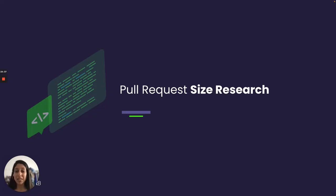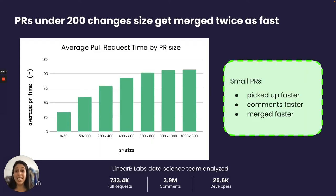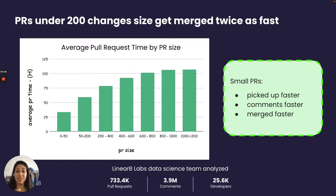At LinearB we did research on PR size based on our customers' data and discovered many interesting things. We looked at the relationship between pull request size and its lifecycle duration. We discovered that PRs under 200 changes get merged much faster — even twice as fast. Why? Small PRs are more attractive: you pick them up faster, review them faster, review them better because they are easier to review, and that also improves quality. You can merge them quicker and deliver the code faster to production.